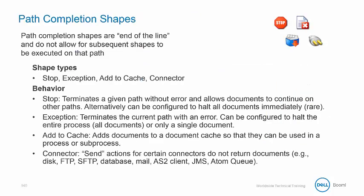Next, we'll look at path completion shapes, which are end-of-the-line shapes that do not allow for subsequent shapes to be executed. These include stop, exception, add to cache, and connector.